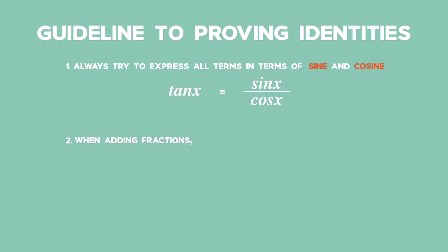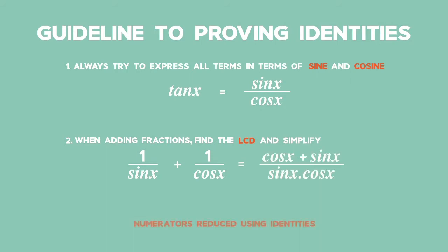Number two: when adding fractions, find the lowest common denominator, the LCD, and simplify. In doing so, the numerators can be reduced using identities.